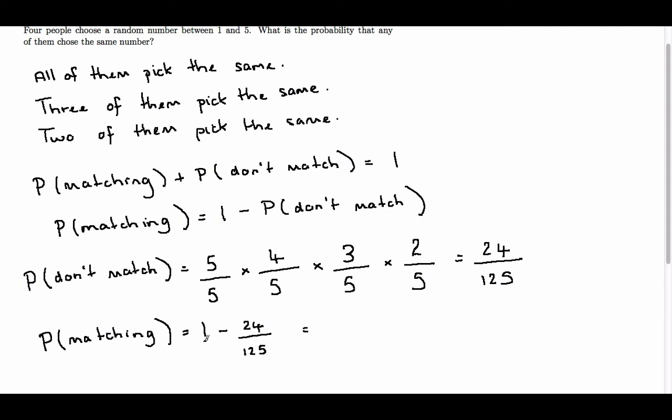To calculate this value, we need to get them over a common denominator, so it's (125 - 24)/125. Now, 125 - 24 is 101/125.